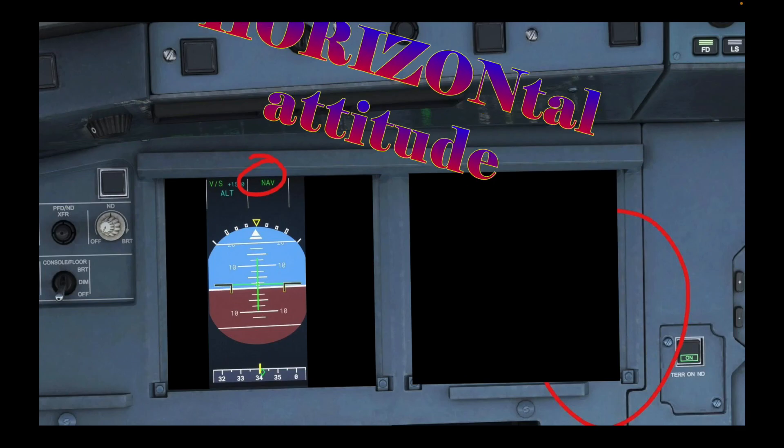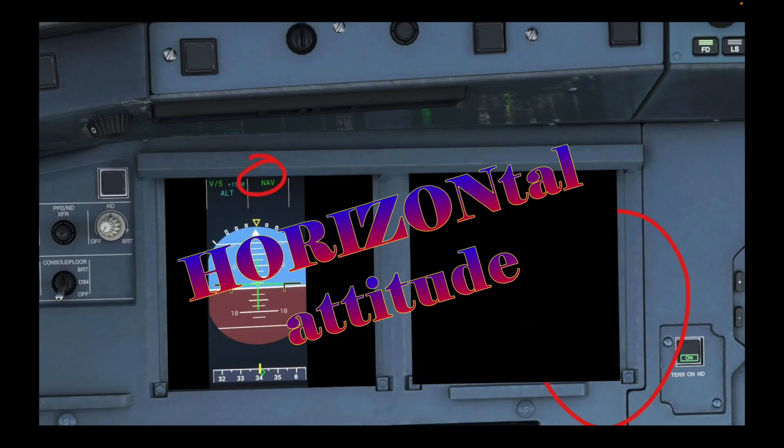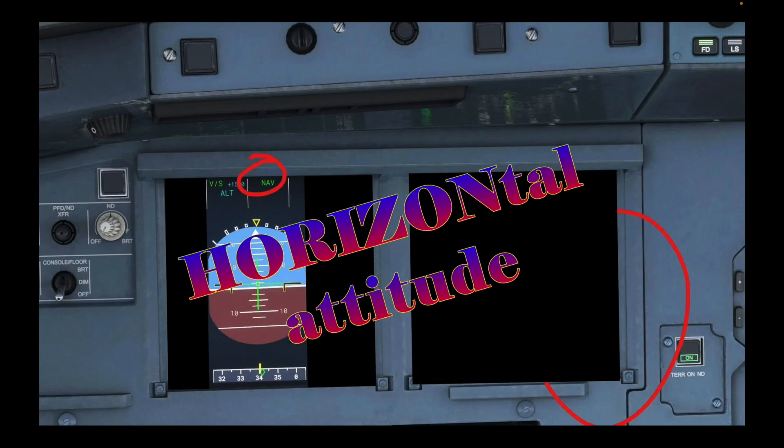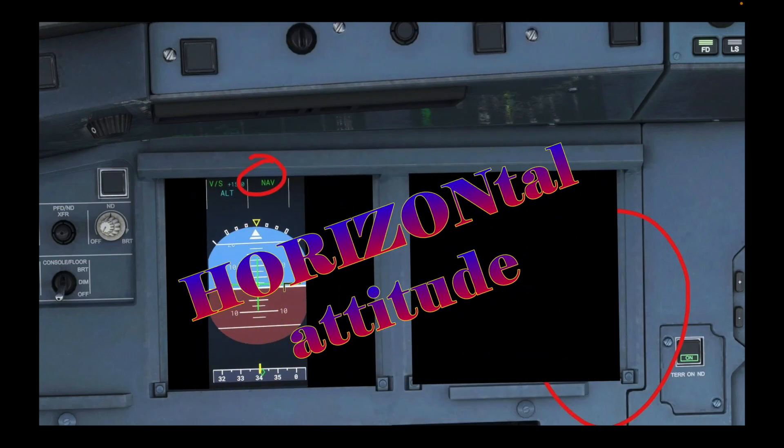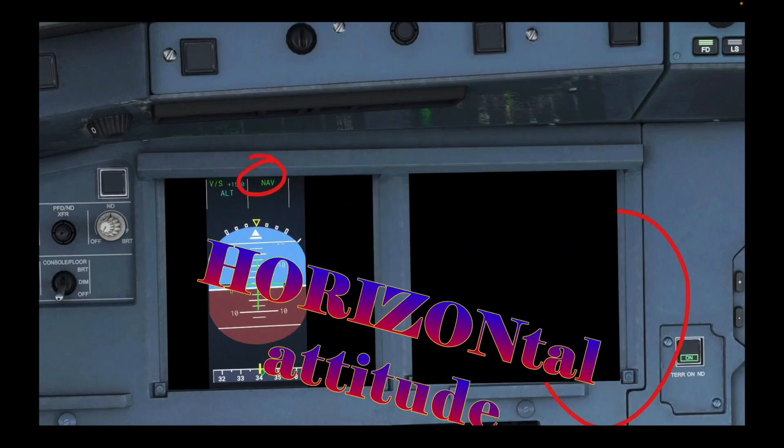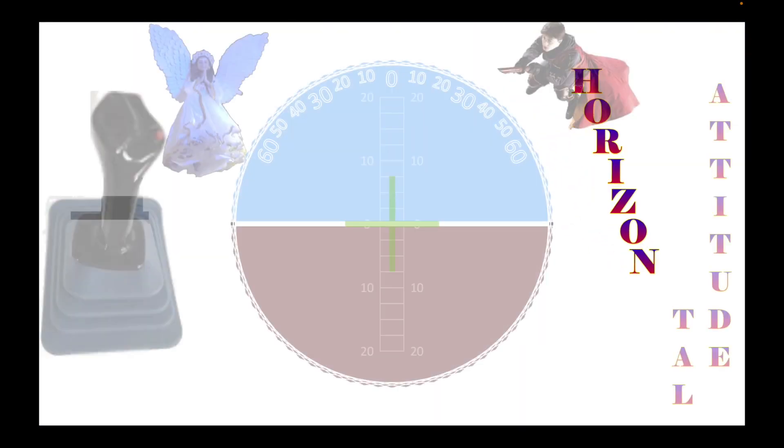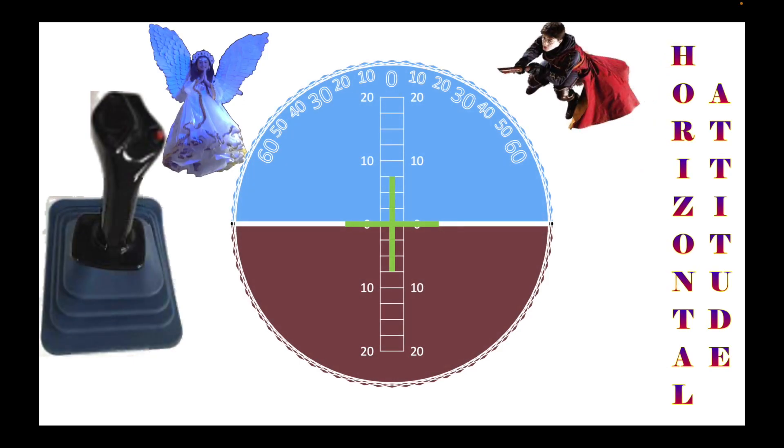The fifth instrument we will be discussing here is the attitude indicator. Where's the horizon? Ideally, this should be called horizontal attitude indicator, because horizontal comes from the word horizon. This flight instrument helps the pilots judge how an airplane is oriented. When darkness and weather obscure the horizon, they refer to the attitude indicator, which uses a gyroscope to show the position of the airplane's wings in relation to an artificial horizon.